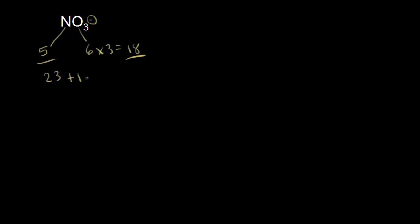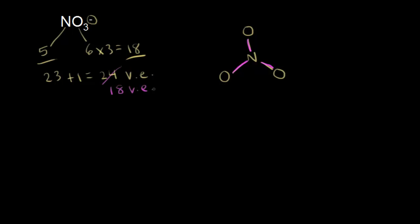So 23 plus 1 gives us a total of 24 valence electrons that we need to represent in our dot structure. Nitrogen is going to go in the center because oxygen is more electronegative, so nitrogen goes in the center. Nitrogen is bonded to 3 oxygens, so I can go ahead and put them in. How many valence electrons have we represented so far? 2, 4, and 6. Therefore 24 minus 6 gives us 18 valence electrons left over.